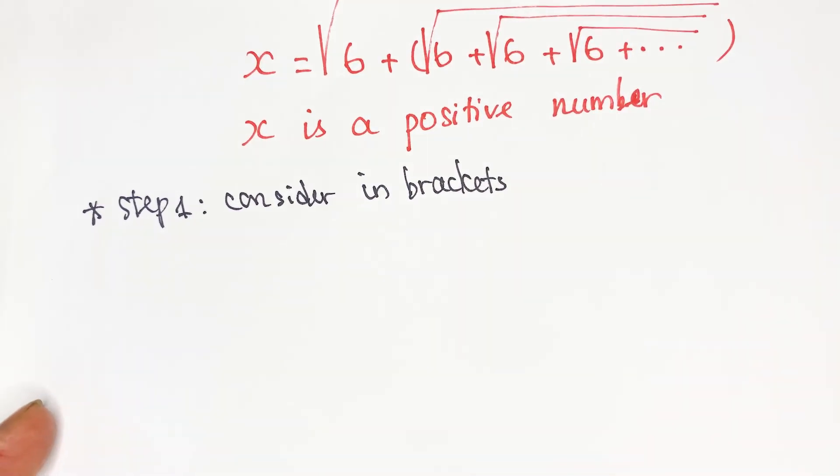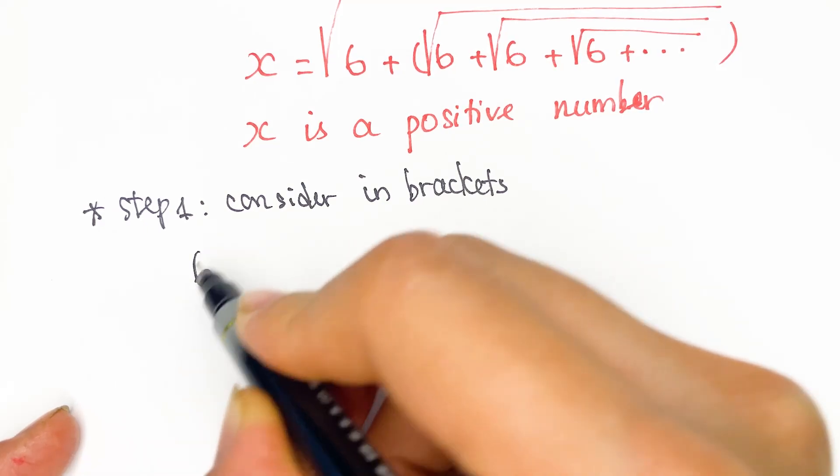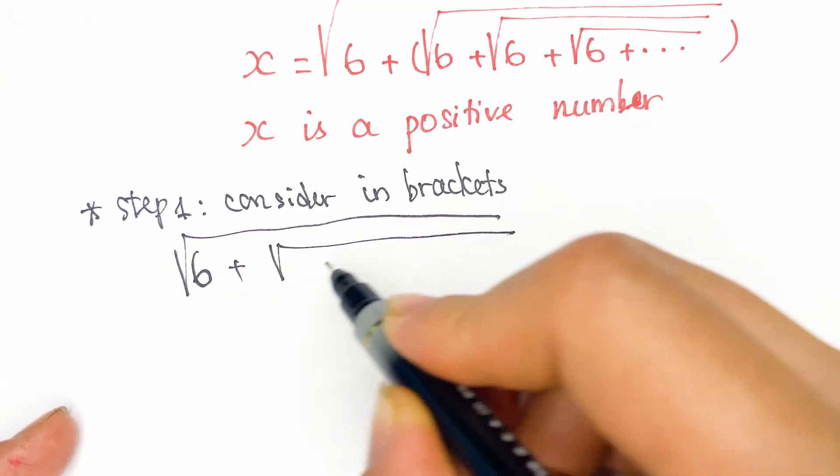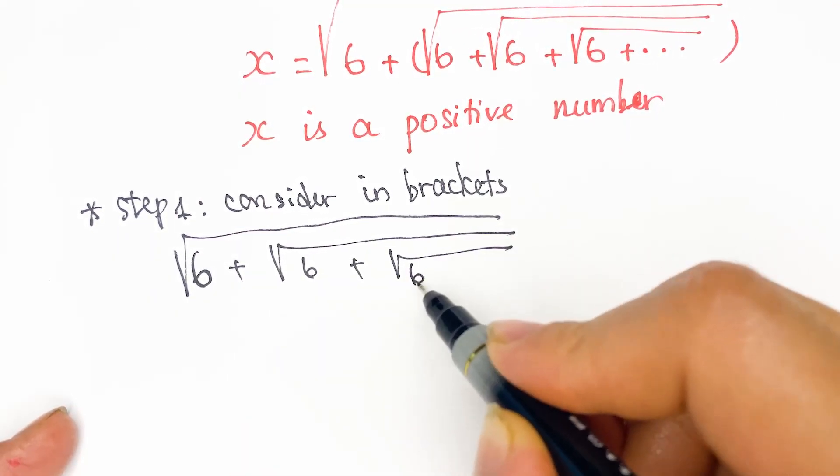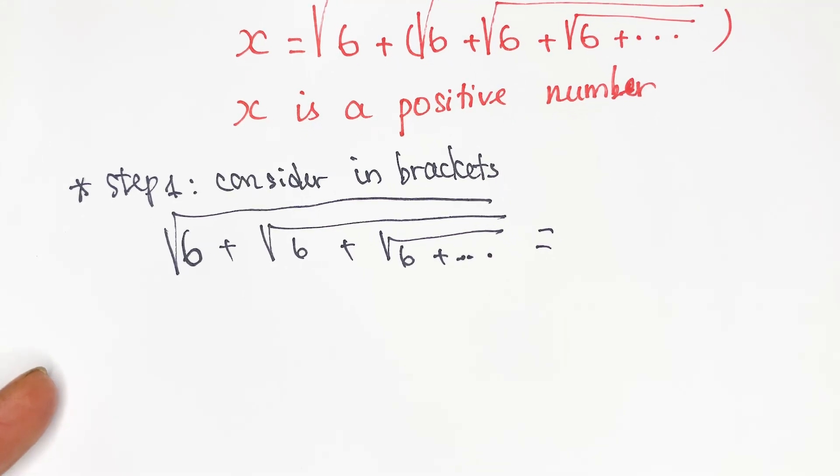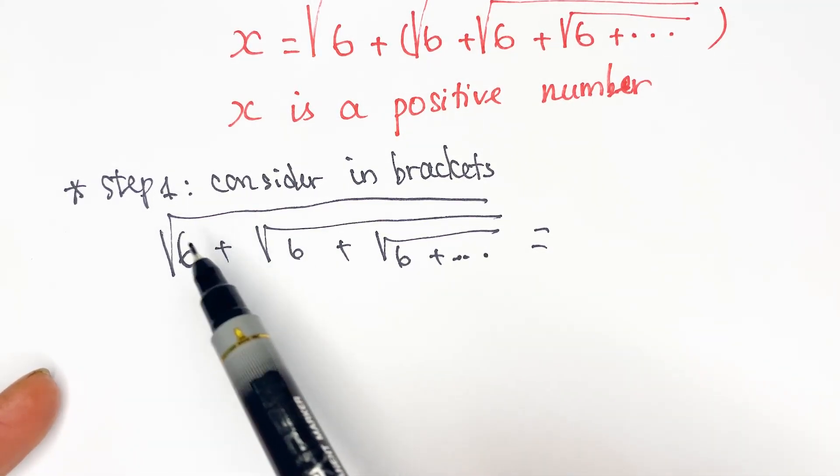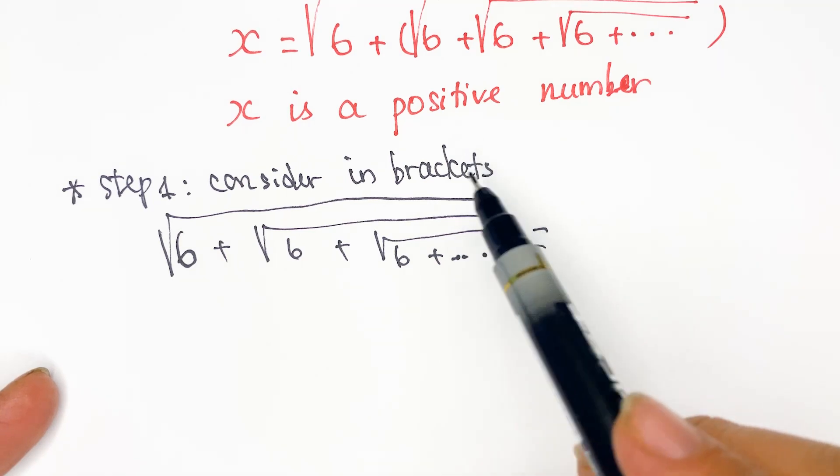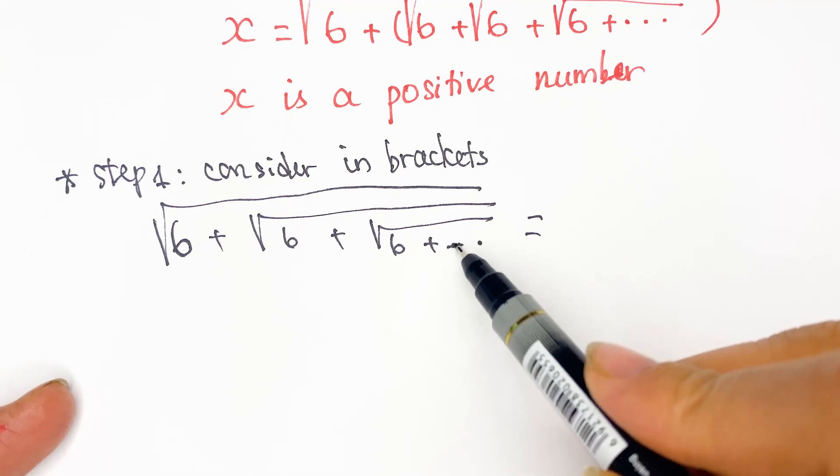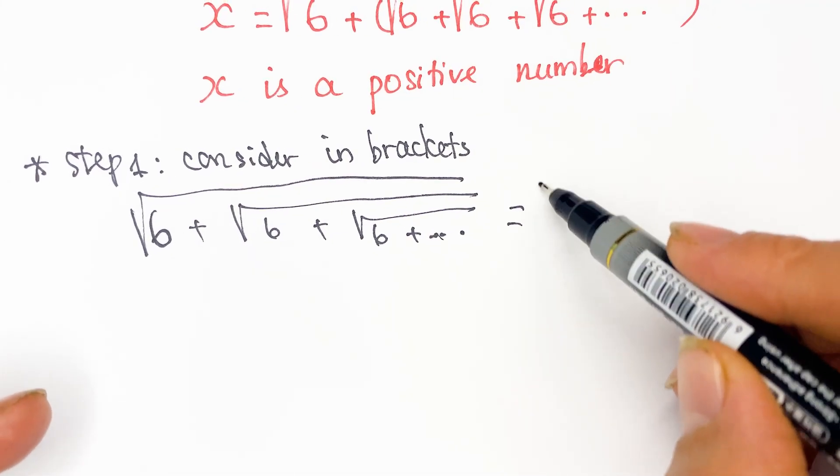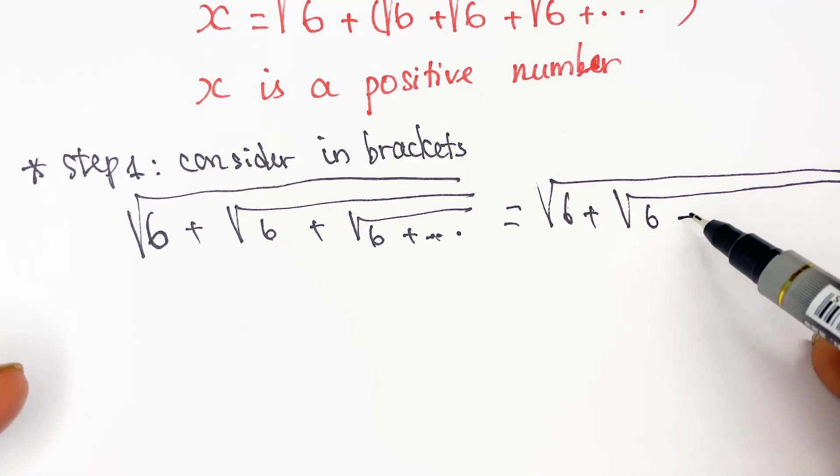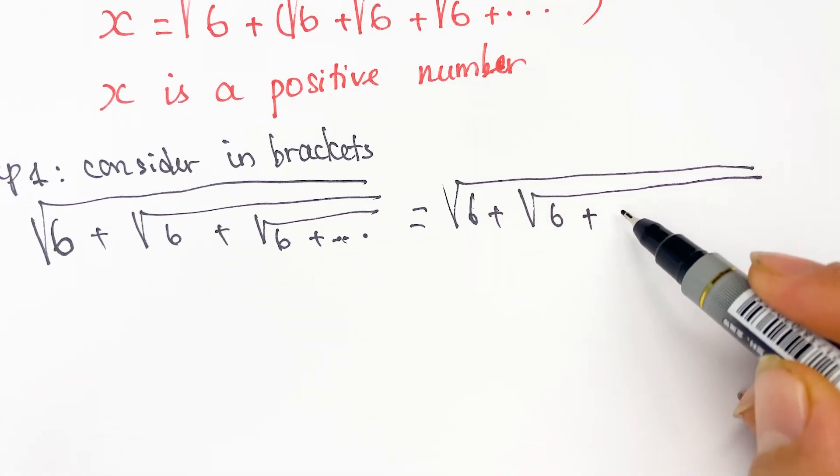You need to write square root of 6 plus square root of 6 plus x equals. Because the expression under the square root here extends infinitely, we can plus one more square root of 6 here. So you can write square root of 6 plus square root of 6 plus square root of 6.